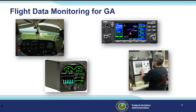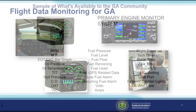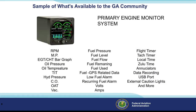Some aircraft, particularly helicopters, are equipped with metallic chip detectors that can forecast engine and transmission failure in time to make a safe landing. Here's just one example of the information available in one small box. This example doesn't include recording capability, but it's certainly one-stop shopping for engine information.